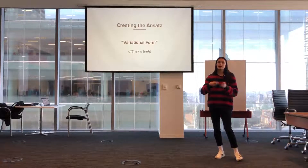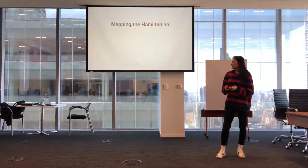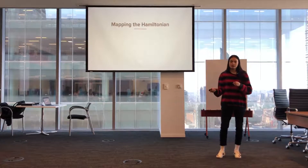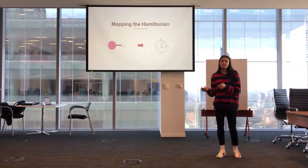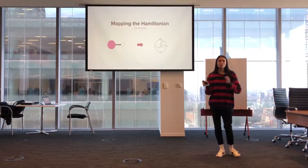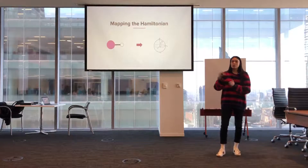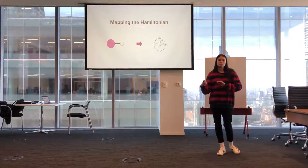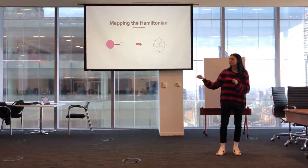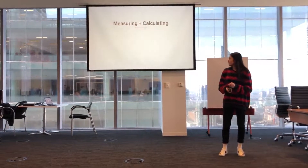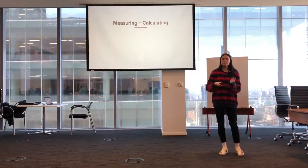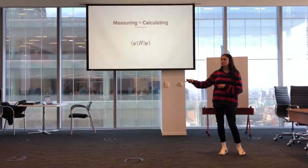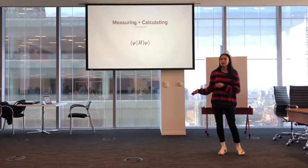After that, I had to map the molecular Hamiltonian into a qubit Hamiltonian. Essentially, I'm taking the matrix that represents all the molecule's energies and mapping it so the quantum computer can mimic the molecule and perform calculations with it as if we were actually working with a molecule itself. Then I had to measure all the values and calculate the expectation value, taking that mapped Hamiltonian and using the trial state created from the ansatz.